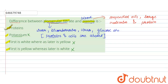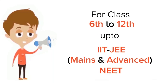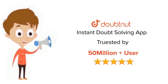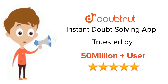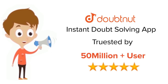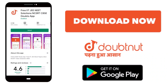The correct answer is that the difference between glomerular filtrate and blood plasma is that protein is present in the blood plasma but absent in the glomerular filtrate. For class 6 to 12th, IIT JEE and NEET level, trusted by more than 5 crore students — download DoubtNet today.